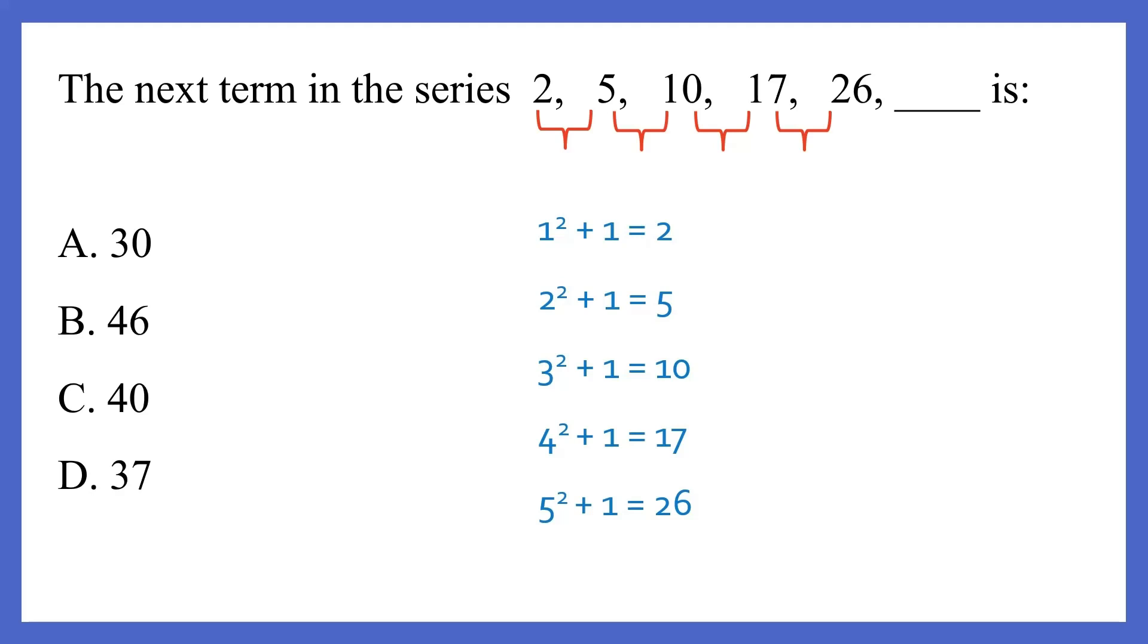So the next term in the series is 6 square plus 1. Which is basically 6 into 6 is 36, plus 1. So your answer is 37, option D, 37.